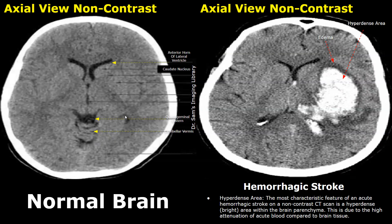We will compare the normal image of the brain with hemorrhagic stroke or intracerebral hemorrhage images. This is an axial view non-contrast image of the brain. These are the anterior horns of lateral ventricles. This structure here is the caudate nucleus. This structure is the quadrigeminal cistern, and posterior to that is the cerebellar vermis.